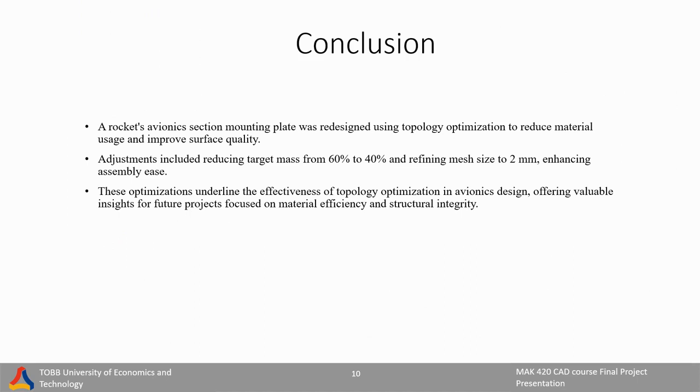In conclusion, the plate in the Avionic section of a rocket was redesigned to be lighter by using a design process. The process involved decreasing the weight from 60% to 40% and improving the mesh to 2mm, which made it easier to put together. These approaches demonstrated the power of using topology optimization in creating avionic parts and provide useful ideas for future design, aiming to save materials and keep strong structures.